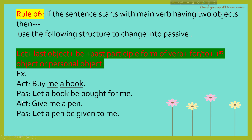Example: 'Buy me a book.' In this sentence there are two objects: 'me' and 'a book.' According to the passive voice structure, we take the last object 'a book,' so the answer will be: 'Let a book be bought for me.' Next example: 'Give me a pen.' The answer will be: 'Let a pen be given to me.' I hope all of you are clear and can transfer such sentences into passive voice very easily.